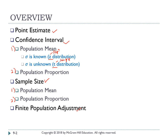The formula for z distribution is: x-bar plus or minus z multiplied by sigma — the population standard deviation — over the square root of n. The formula for t distribution is: x-bar plus or minus t multiplied by small s — the sample standard deviation — over the square root of n. The difference is that z uses sigma (population standard deviation) while t uses small s (sample standard deviation).